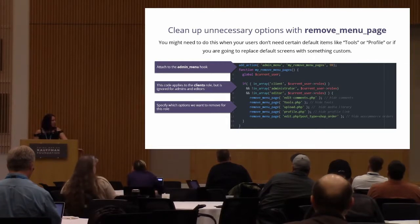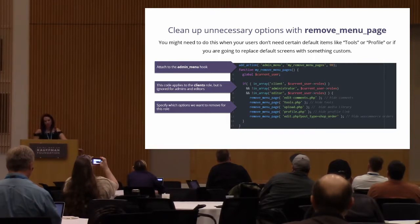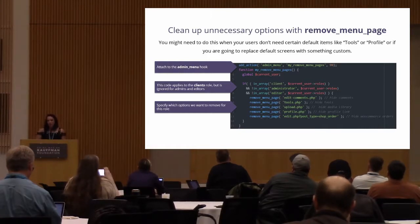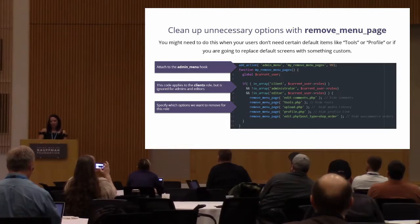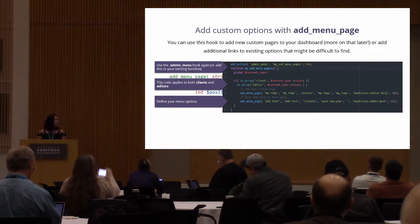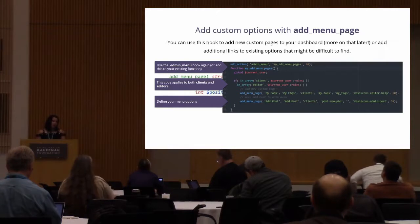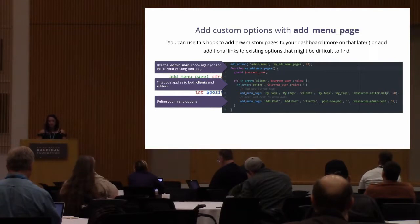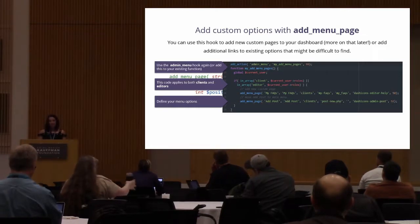I have specified a lot of options to remove — comments, tools, media library, profile. You go by what the URL is for the admin page, and in the WordPress Codex there is a list of what those all are, but you can usually figure it out yourself. In other instances you might want to add new custom options using add_menu_page, which has a lot more properties. You can use this to add new custom pages, or you can add links to existing options to move them around and make things easier to understand.